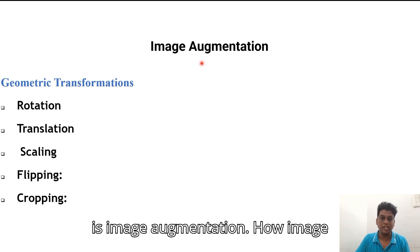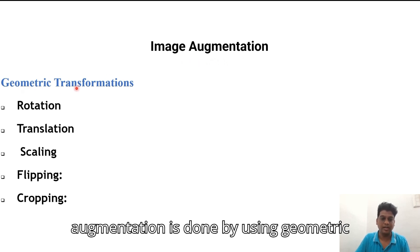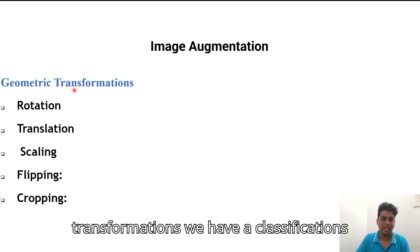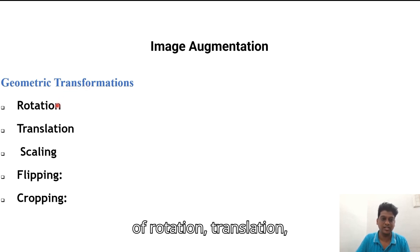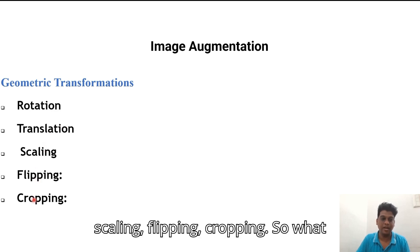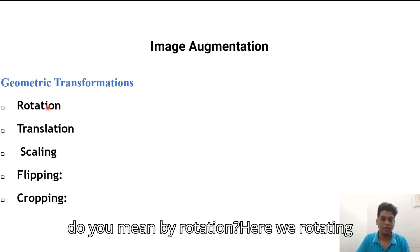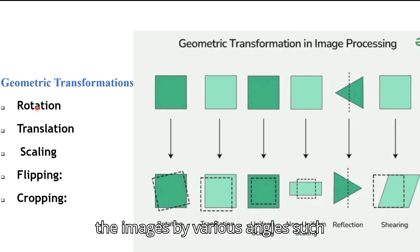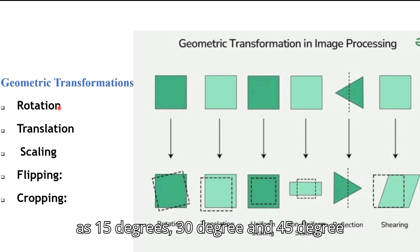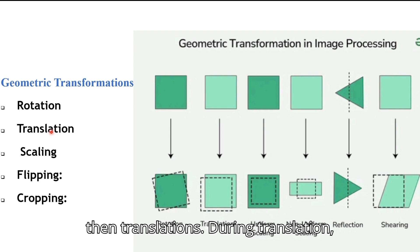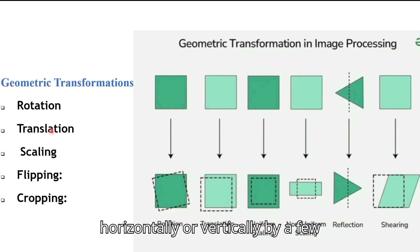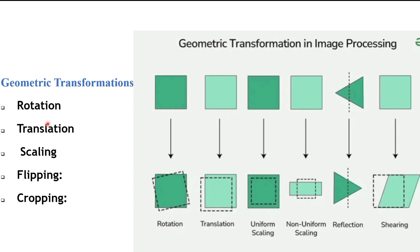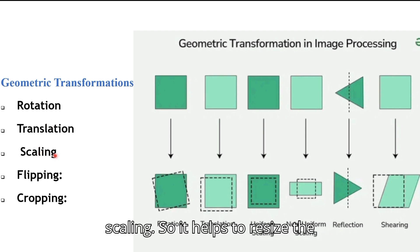The first type is image augmentation, which is done using geometric transformations. In geometric transformations we have classifications of rotation, translation, scaling, flipping, and cropping. Rotation means rotating the images by various angles such as 15 degrees, 30 degrees, and 45 degrees. During translation, we can shift the images horizontally or vertically by a few pixels, which helps the model learn features that are invariant to position within the image.